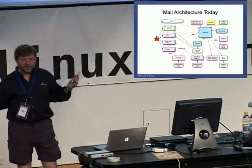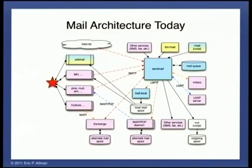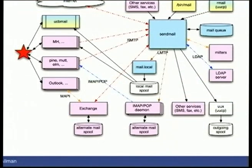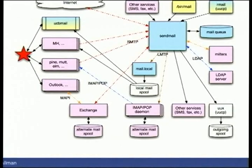This is kind of what the email world looks like today — substantially more complex. You see a lot of the same old stuff, but now there's LDAP, Milters, various access daemons. There's more than just IMAP and POP — there's Exchange, proprietary protocols like MAPI, there's Outlook, there's tons of user interfaces. It's actually dramatically complex at anything other than the most trivial site.